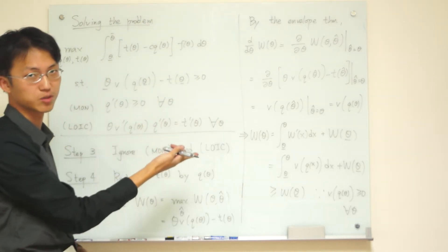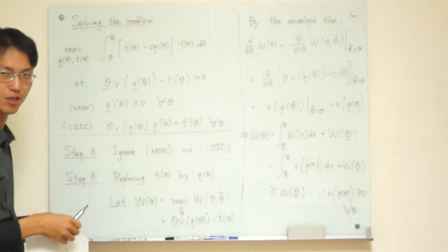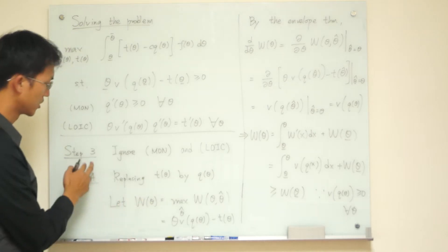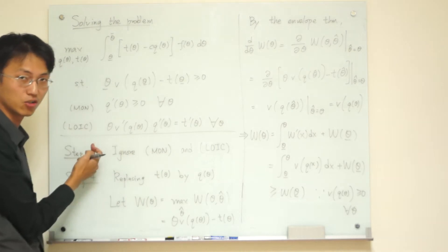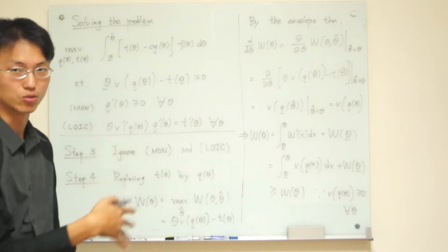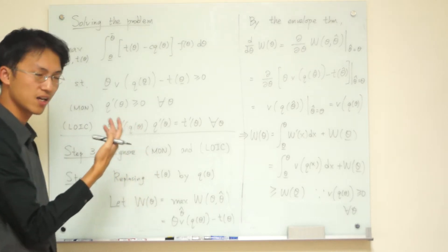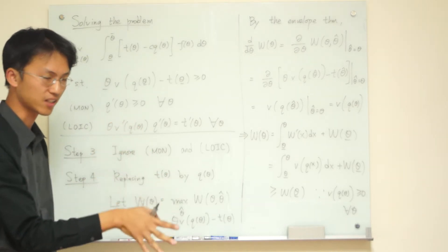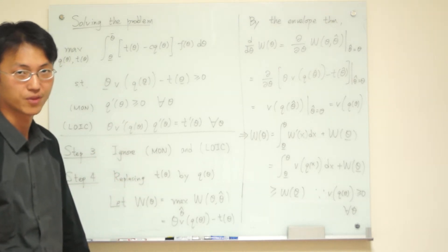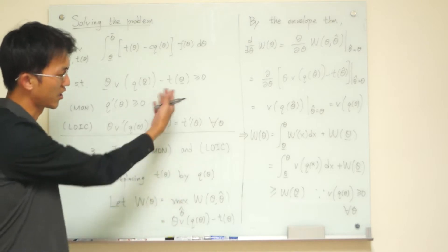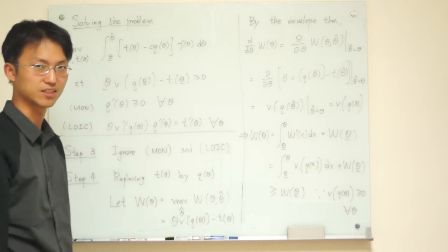Okay. So, I'm going to do something that may make you surprised. In step three, I'm going to ignore the monotonicity and the local IC constraint. So, wow, what we are doing. That means what I am doing is to relax the thing that we have just proved to be the IC constraint. Or we should say, I just removed or ignored all those IC constraints.